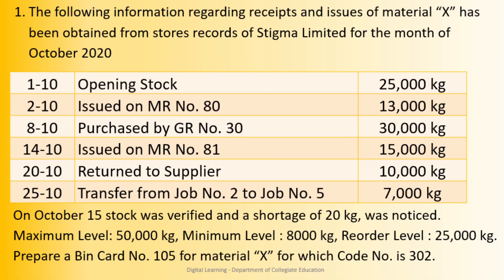The first problem: the following information regarding receipts and issues of Material X has been obtained from store records of Stigma Ltd. for the month of October 2020. 1st October, opening stock 25,000 kg. 2nd October, issued on EMR No. 80, 13,000 kg. 8th October, purchased by GR No. 30, 30,000 kg.